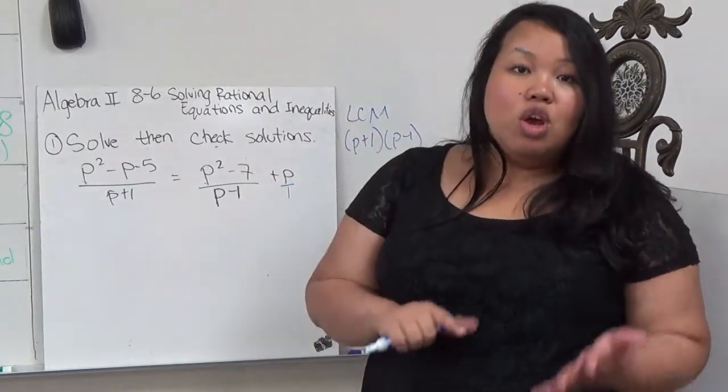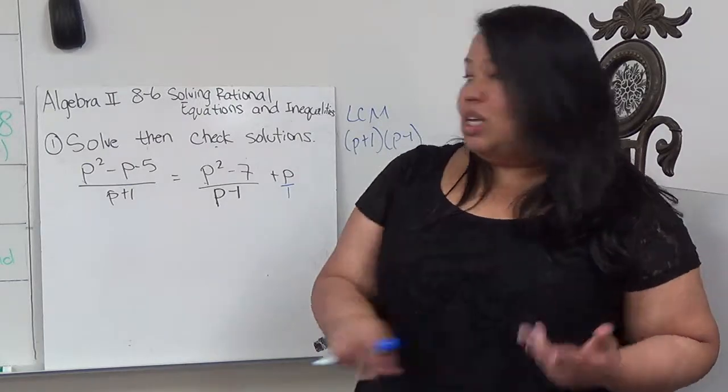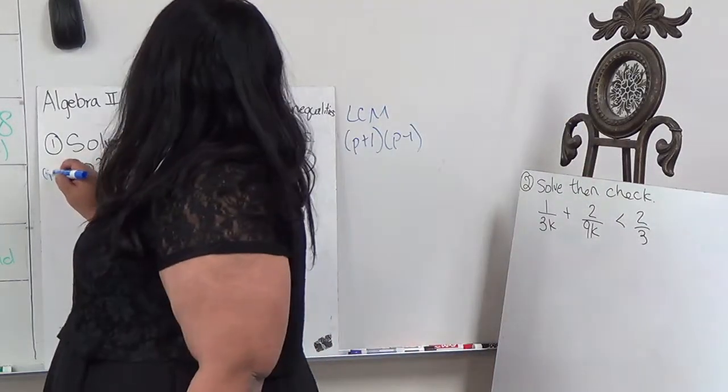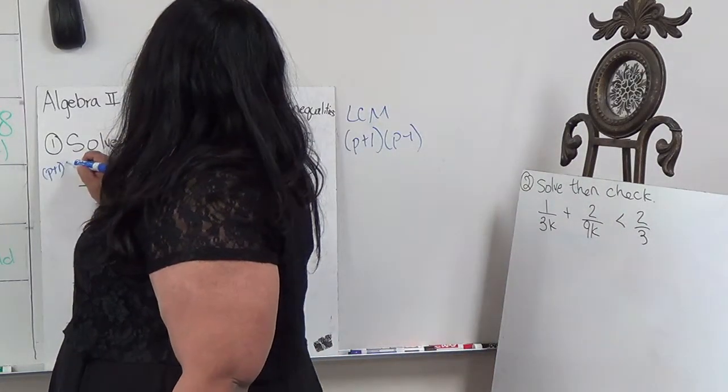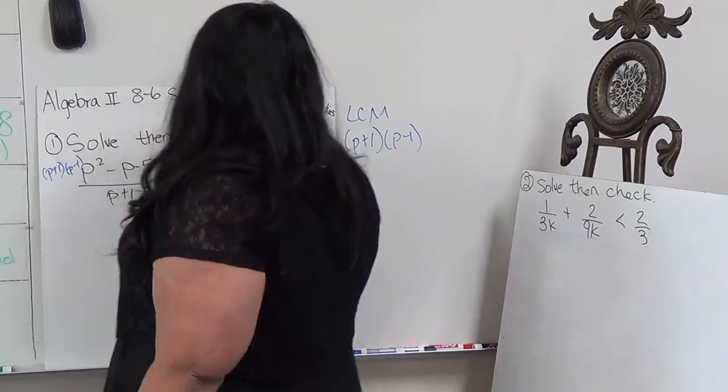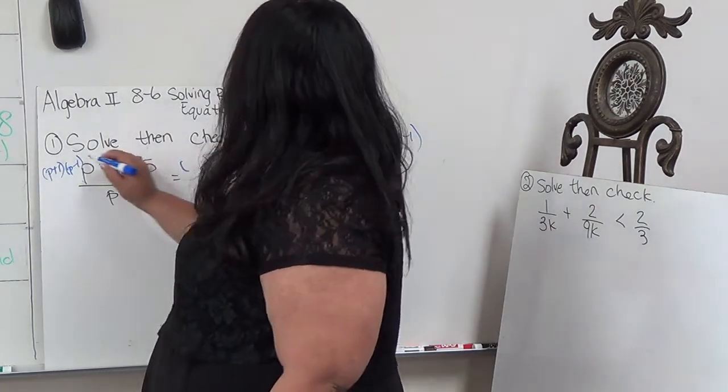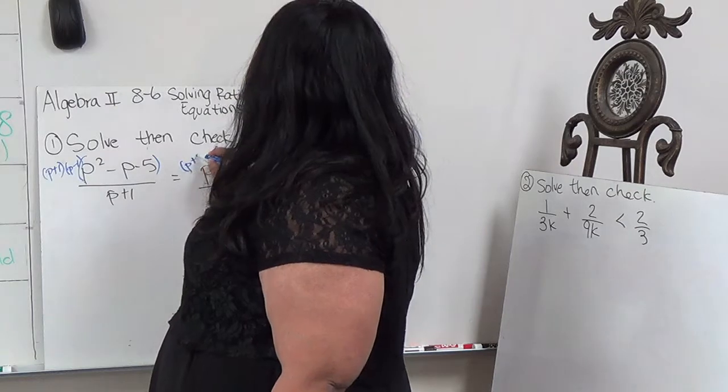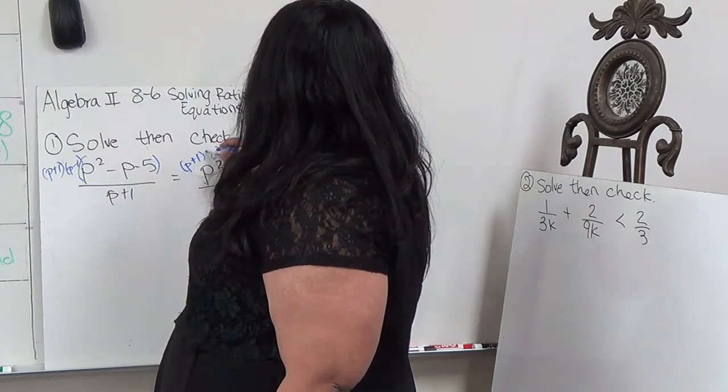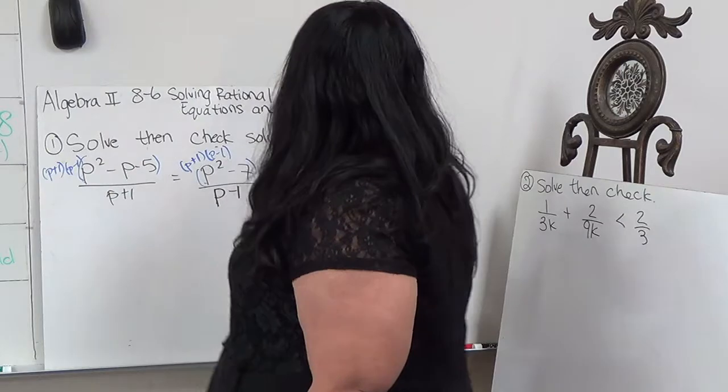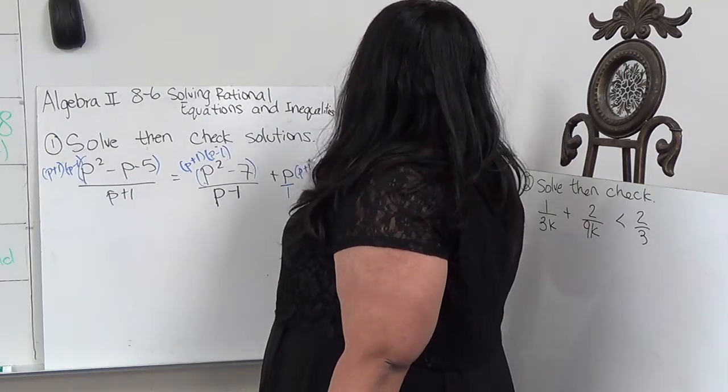This is (P+1)(P-1). I'm multiplying this by (P+1)(P-1), this in parentheses by (P+1)(P-1), and then (P+1)(P-1).